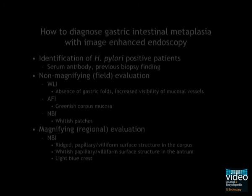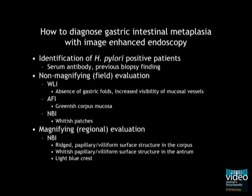To diagnose gastric intestinal metaplasia efficiently: first, select patients with H. pylori infection to increase pre-test probability. Second, look for areas that are likely to have intestinal metaplasia, such as mucosa with no gastric folds and increased visibility of mucosal vessel in white light images, greenish corpus mucosa in AFI images, or whitish patches in NBI images. Then apply magnifying NBI to those areas to find rigid papillary or villiform surface structures with the light blue crest sign.